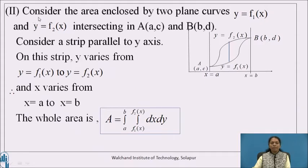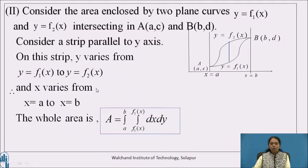On the other way, consider the area enclosed by two plane curves y = f₁(x) and y = f₂(x), intersecting at points A and B. Consider a strip parallel to the y-axis, so that on this strip y varies from the bottom y = f₁(x) to the top y = f₂(x), and x has constant limits from x = a to x = b. Therefore, the whole area is: A = ∫(a to b) ∫(f₁(x) to f₂(x)) dy dx.